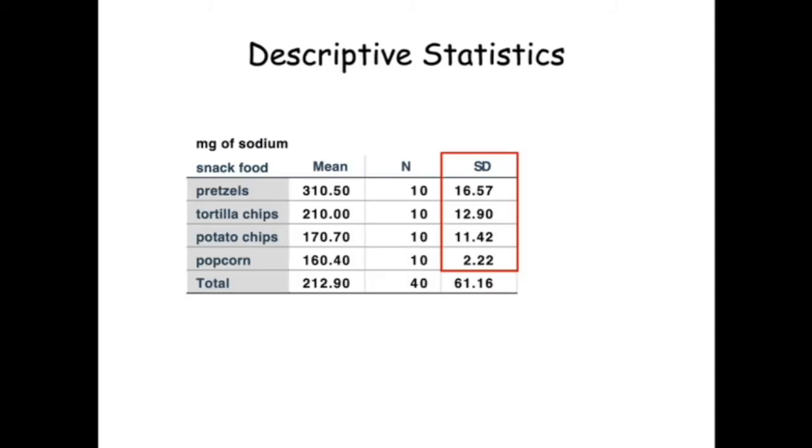The table of descriptive statistics provides some clue as to why the equal variance assumption wasn't met. The variability for popcorn is much lower than for the other snack foods.